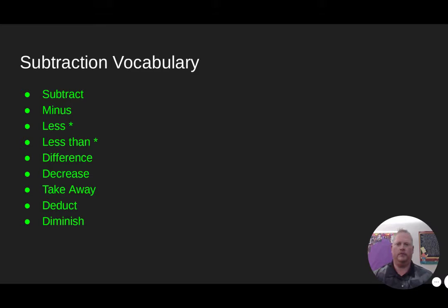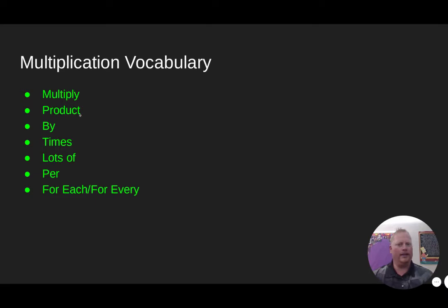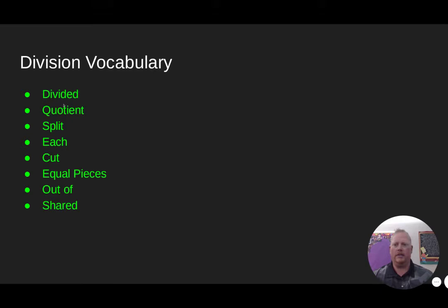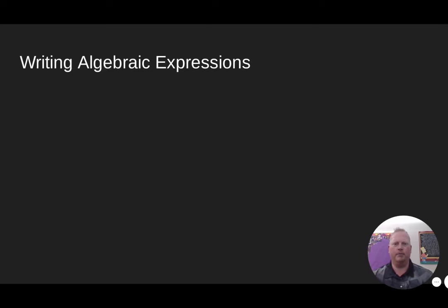Multiplication vocabulary includes: product, times, per, for each, and for every. For division, key words are: divided, quotient, split, each, cut, equal pieces, out of, shared. The main ones to focus on are quotient and each.